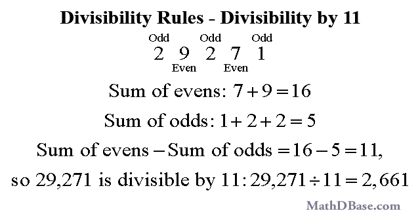In 29,271, the even-placed digits 7 and 9 have a sum of 16, and the odd-placed digits 1, 2, and 2 have a sum of 5. The difference between the two sums is 16 minus 5, or 11, which is divisible by 11. So 29,271 is divisible by 11, with a quotient of 2,661.